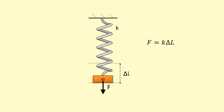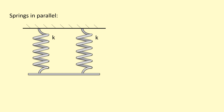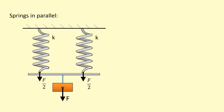The force is equal to the spring constant times delta-l. Now I have two springs in parallel with each other, attached by a bar at the bottom. I'm going to hang a mass m on it, applying a force F. For the bar to be in equilibrium, the upward force on it must equal F, so each spring supplies a force of F/2. That means the force on each spring is F divided by two.